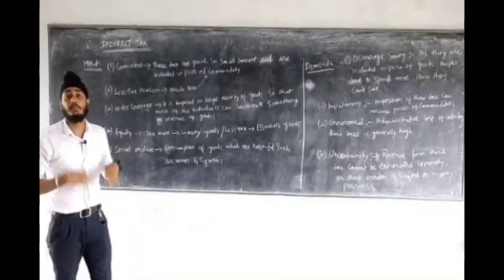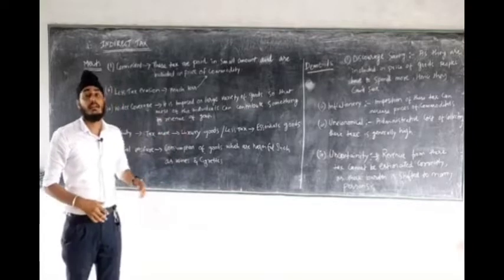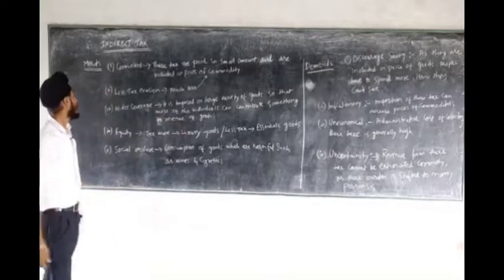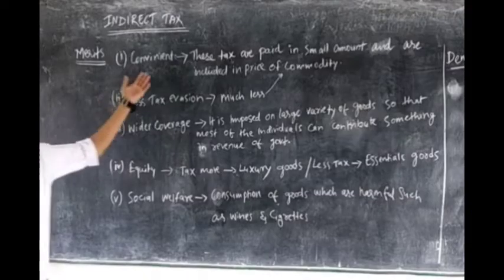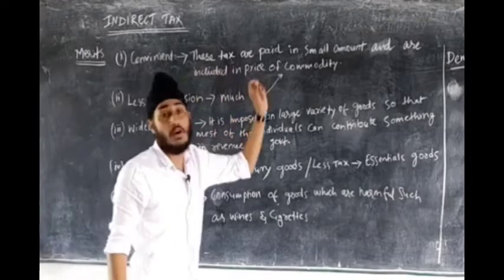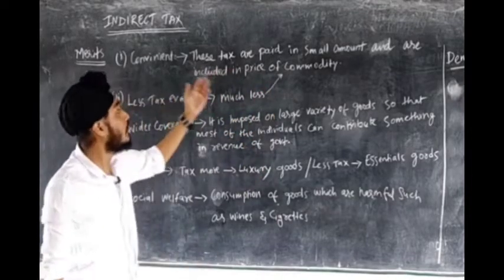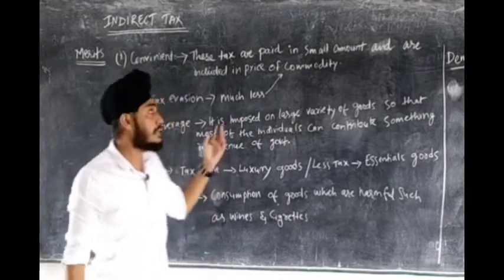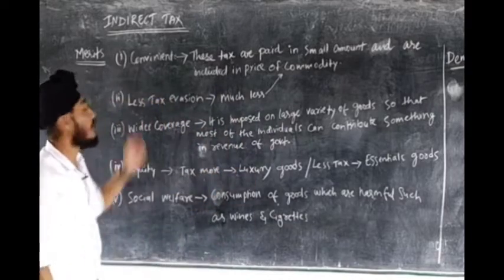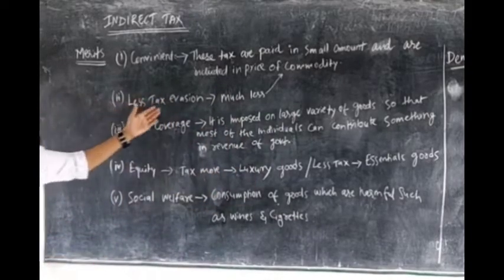Now we will see the merits and demerits of indirect tax. Indirect taxes are those taxes whose burden can be shifted from one person to another. The first merit is convenient — these taxes are paid in small amounts and are included in the price of the commodity, that is the reason they are convenient.